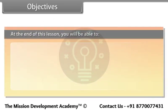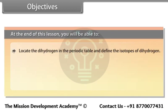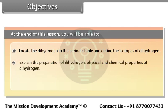At the end of this lesson, you will be able to: locate hydrogen in the periodic table and define the isotopes of hydrogen; explain the preparation of dihydrogen, physical and chemical properties of dihydrogen; and explain hydrides.